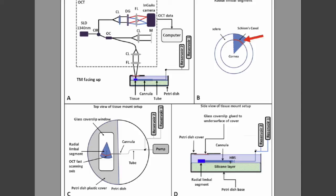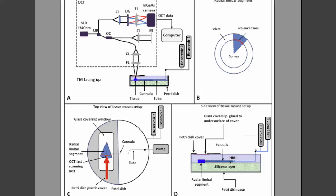Materials and methods. We use radial limbal segments containing Schlemm's canal, place the limbal segments face up so that the trabecular meshwork is facing the OCT beam, and then we place a cannula within Schlemm's canal, which leads to reservoirs where we can control pressure. The OCT scans through radial limbal segments.